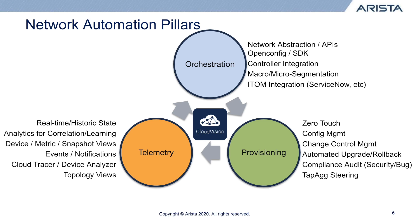Generally speaking, there are three main functionalities that Cloud Vision can provide an organization. You don't have to use all of them — you can use just one of them. We're going to be concentrating on these three, specifically with configuration management.